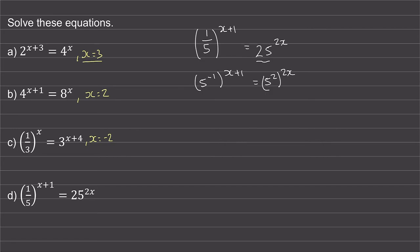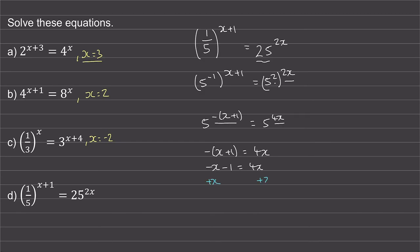Now we can use the power rule — we'll multiply the negative 1 by the x plus 1. So we get 5 to the power of negative x minus 1 is equal to 5 to the power of 4x. Now we can equate the two powers. So negative x minus 1 is equal to 4x. We'll add x to both sides — these will cancel — so negative 1 is equal to 5x.